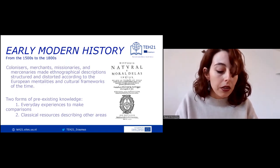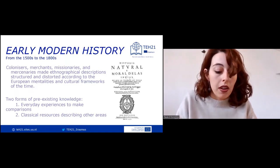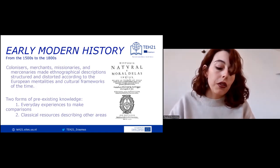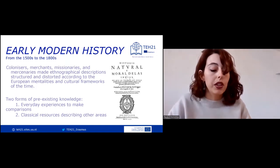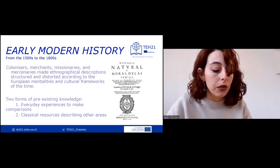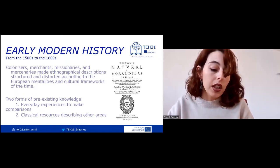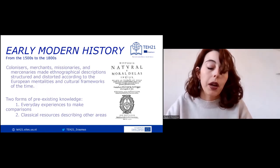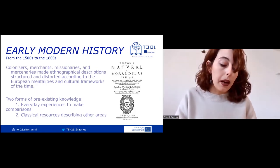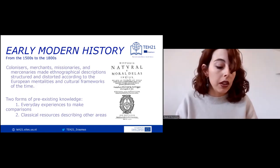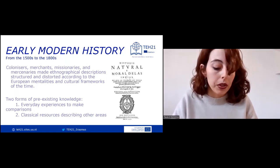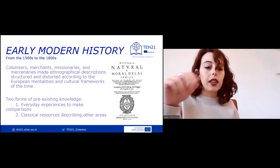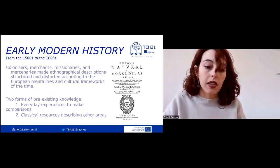The historical documents from the time are replete with information about how Europeans perceived what they encountered. These ethnographic descriptions were in various ways structured and distorted according to European mentalities and cultural frameworks of the time. Religious beliefs highly influenced these frameworks, as these were the terms by which Europeans primarily expressed their identity, but geographical, political, and cultural frameworks were also of importance. There were two forms of pre-existing knowledge particularly important for Europeans trying to make sense of new environments.